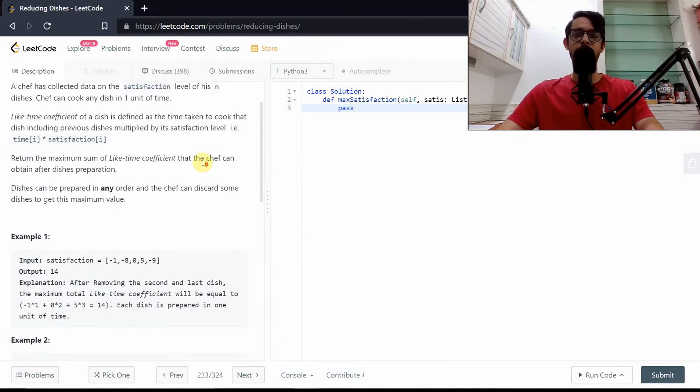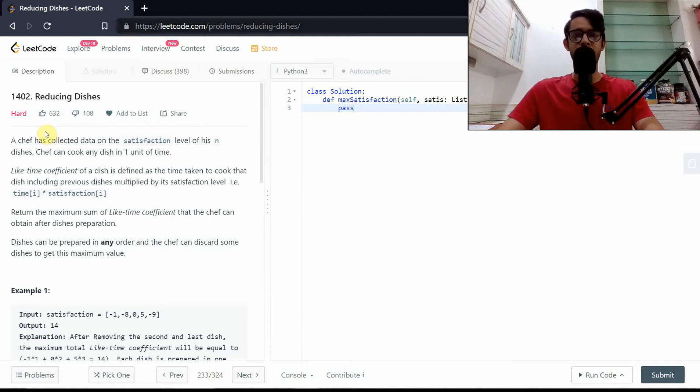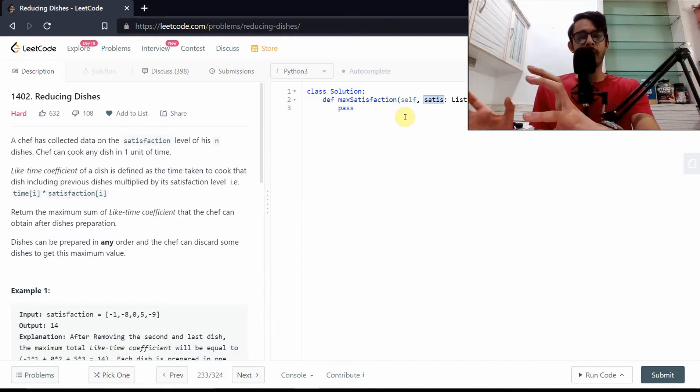First let's talk about the problem itself. A chef has collected data on satisfaction level of n dishes. Basically there is a satisfaction list given to us giving scores of how good dishes are. The lifetime coefficient of a dish is defined as the time taken to cook that dish including previous dishes. Basically the current time i multiplied by the satisfaction of i will give you some coefficient, and the goal is to return the maximum sum of all of the coefficients.